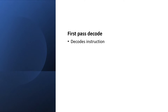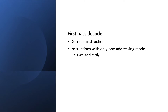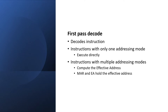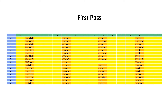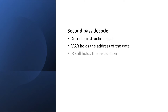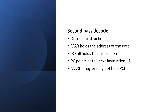I'm going to do the decode in two parts: first pass and second pass decode. First pass decode is compulsory — every instruction goes through this. Instructions with only one addressing mode jump straight to their execution cycle after this. For instructions with multiple addressing modes, we compute the effective address in the first pass, so the EA registers hold the address reflected in the MAR output flip-flops. Then when appropriate, we go into second pass decode. The second pass is optional; not all instructions have one. At second pass, the instruction register still holds the instruction and MAR holds the address of the data.